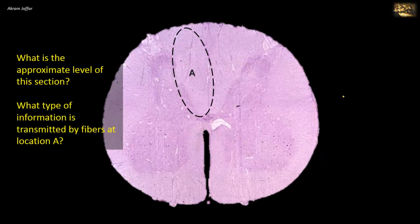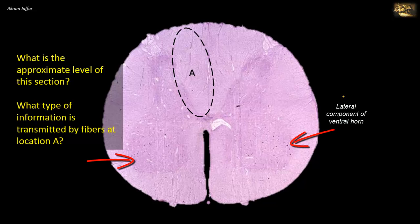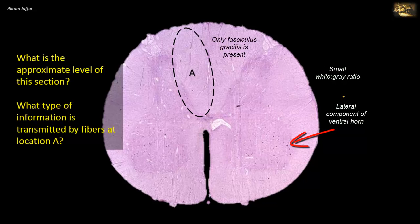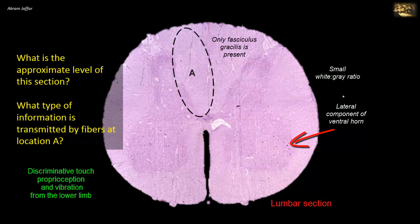What is the approximate level of this section? What type of information is transmitted by fibers at A? Note the following characteristics: first, there is a clear lateral component of the ventral horn; second, there is a small white-to-gray ratio, indicating a lower segment section; third, there is only one compartment in the dorsal column, the fasciculus gracilis. Together, these are characteristics of a lumbar level. The dorsal funiculus at this level is formed of fasciculus gracilis only, carrying sensations of position, proprioception, discriminative touch, and vibration from the lower limb, located at A.